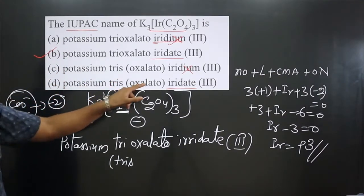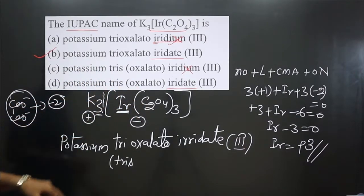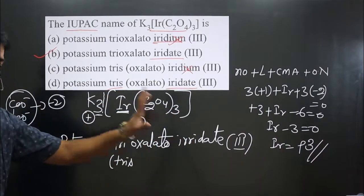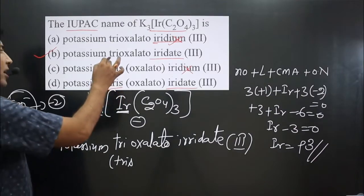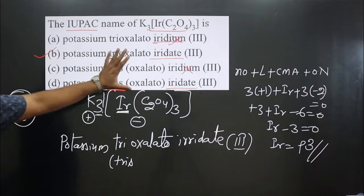If you look at option D, potassium tris-oxalato, in this case you can see it is considering oxalate ion as a polydentate ligand, so it is using tris, and iridate three. The remaining part is the same. We have tri in this case for unidentate ligand. In this case we are considering it as a polydentate ligand. Only this is the difference, and the remaining portion is the same.